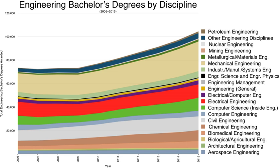For example, the Faculty of Engineering of the University of Hong Kong has five departments providing undergraduate, postgraduate and research degrees in civil engineering, computer science, electrical and electronic engineering, industrial and manufacturing systems engineering, as well as mechanical engineering.